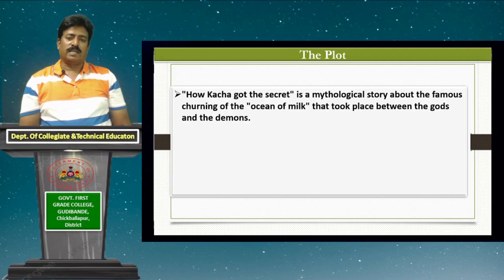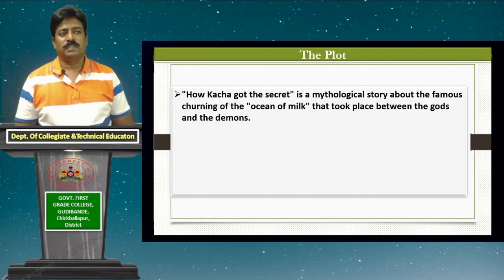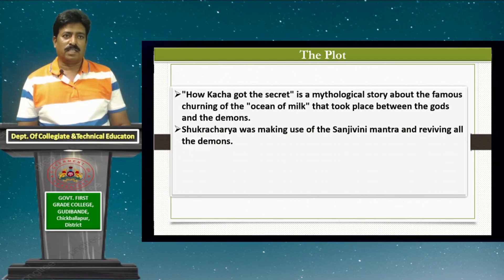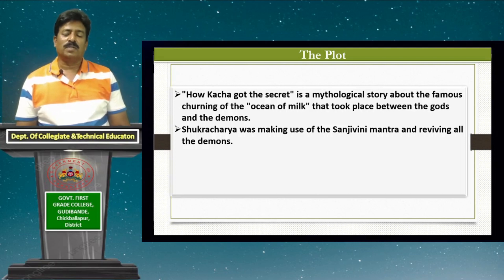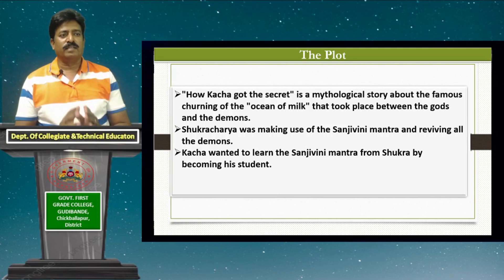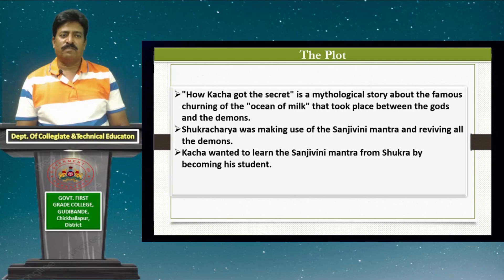But suddenly the calculation changed — the number of gods was decreasing while the demons were increasing. The handsome young man of Brahaspati inquired with his father about these developments. Brahaspati answered that the learned teacher of demons, Bhargava Shukracharya, was using the Sanjivini mantra to revive all the demons. Unfortunately, Brahaspati did not know the Sanjivini mantra. Kacha found a way, saying he would learn it from Shukracharya by becoming his student. He replied that to win the game, one must be in the game.